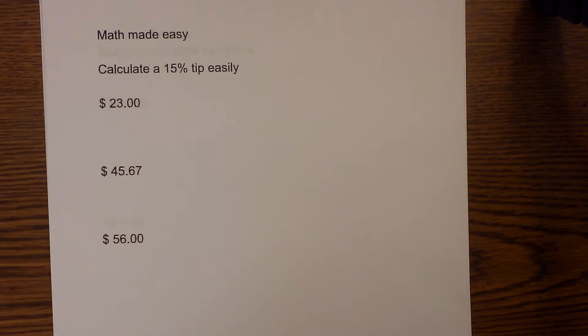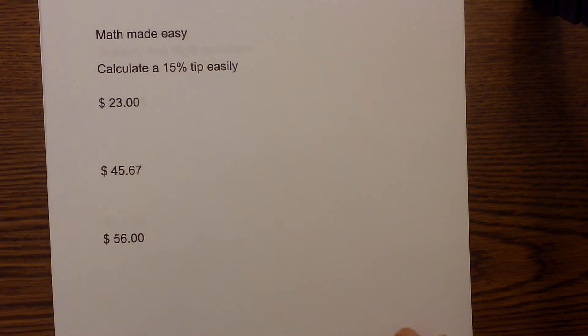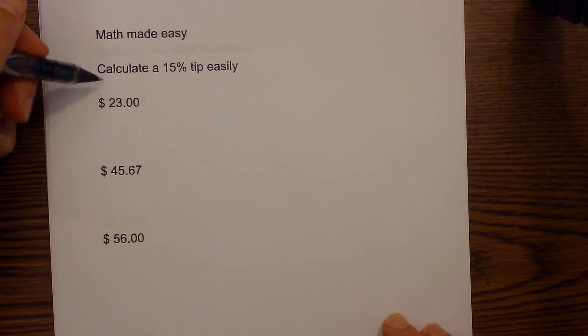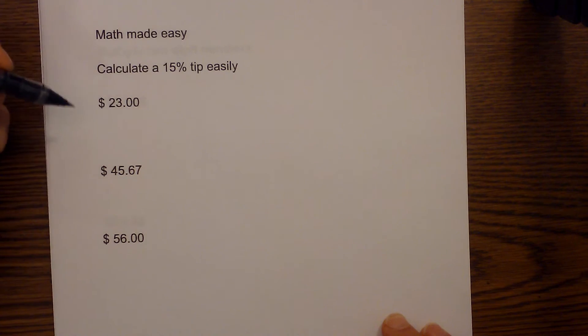Math and Science in Math Made Easy. In this video I would like to talk about how you can easily calculate a 15% tip if you are out at a restaurant. Basically what you can do is use a trick where you can multiply any number by 15 and then divide that by 100.